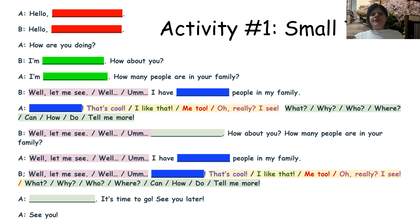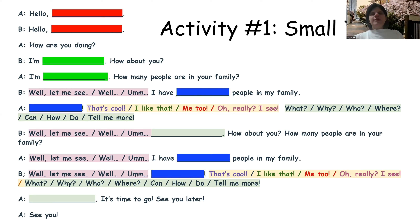So how do I promote pair and group work while using CSs? One activity is small talk. Small talk is where students have about four minutes to get up, go around the classroom, and talk to as many other students as possible using CSs.